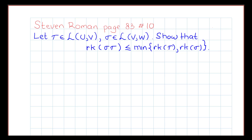Hello, welcome back again to the channel. On this video we are going to discuss a problem from Steven Roman's Advanced Linear Algebra book, page 83, number 10. Let tau be a linear transformation from U to V, and sigma is a linear transformation from V to W.